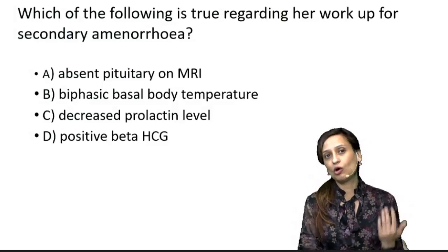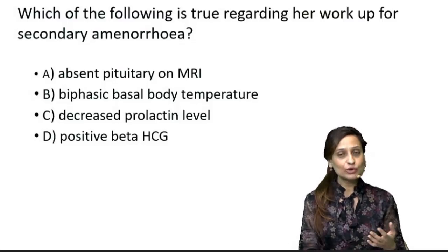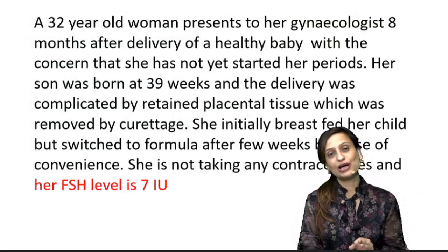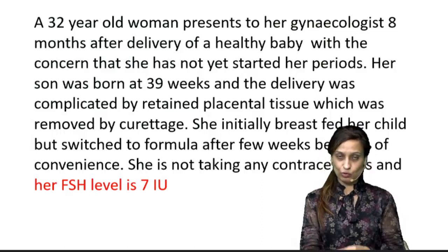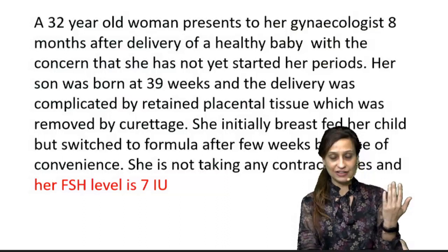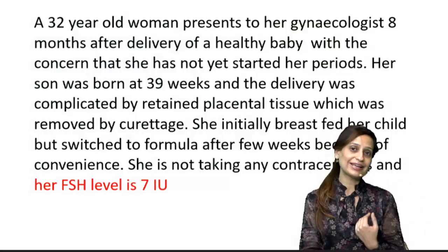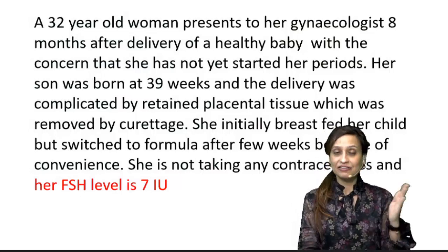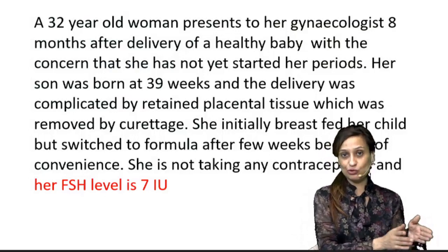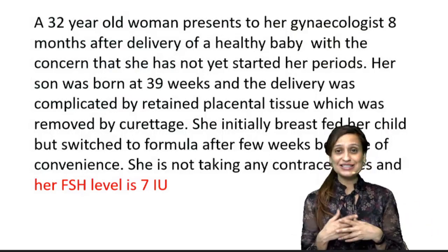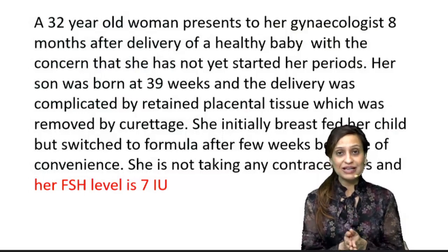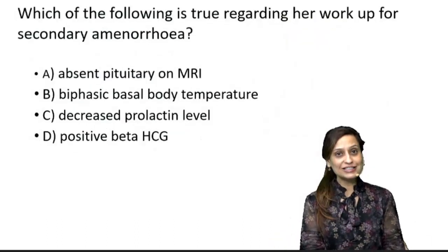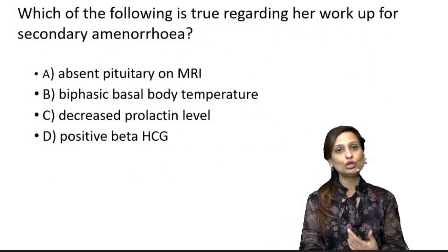How do we rule out a fresh new pregnancy? Option D — her workup will not be positive for beta-HCG. The relevant keyword is the FSH value of 7 international units. In pregnancy, estrogen and progesterone levels are very high, causing feedback inhibition, and gonadotropin levels — LH and FSH — are very suppressed, typically 1–3 international units maximum. Since the FSH here is not suppressed and is towards normal, this is not a case of fresh new pregnancy, so beta-HCG would not be positive.